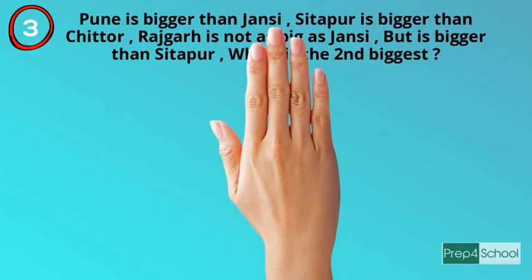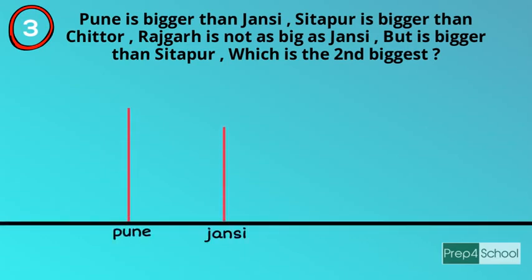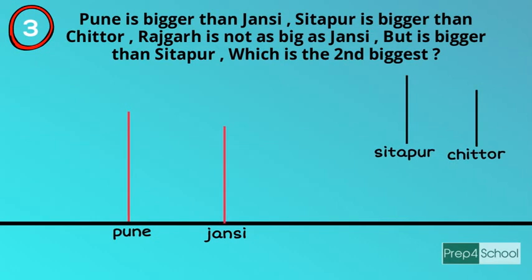Let's take another problem: Pune is bigger than Jansi. Sitapur is bigger than Chitor. Rajkar is not as big as Jansi but is bigger than Sitapur. Which is the second biggest? From the first sentence, Pune > Jansi. From the second sentence, Sitapur > Chitor — these cannot be related to the first figure yet, so we draw a separate order. From the third sentence, Rajkar is smaller than Jansi.